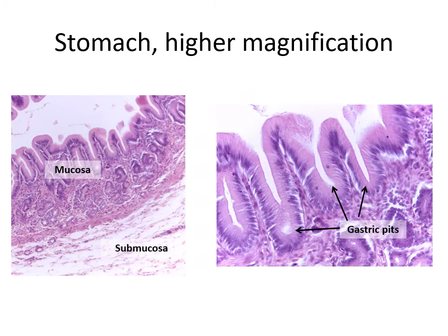If we take a closer look we can again see those gastric pits where things dive down in. What we can't see very well on this slide are the goblet cells that produce mucus, which are really important as a defense for the stomach against the acid that it secretes.